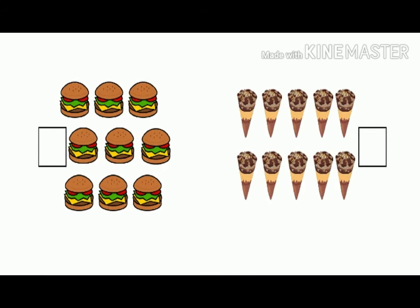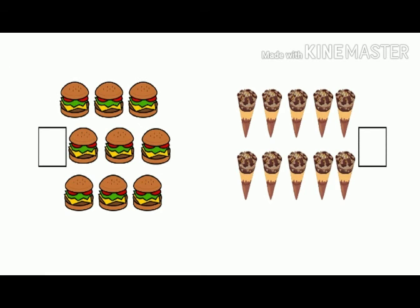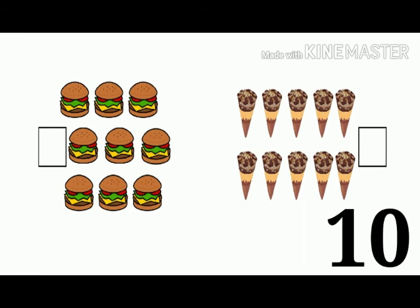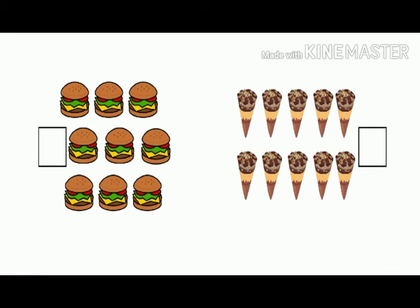Here on the left side we see burgers and on the right side we see ice creams. Let us count — there are nine burgers and ten ice creams. So burgers are less, and we are going to put a tick mark beside the burgers and a cross mark beside the ice creams.